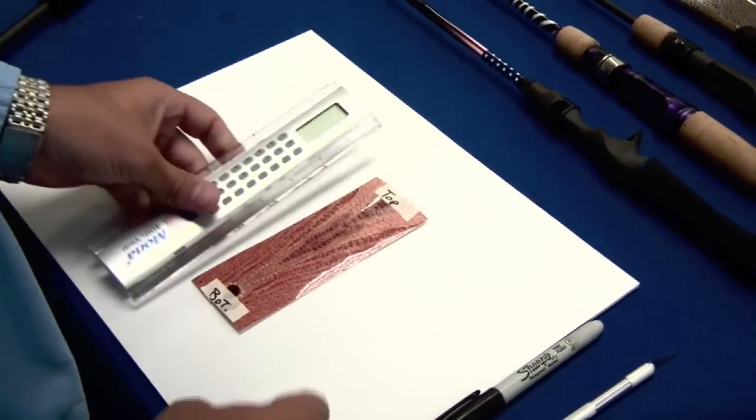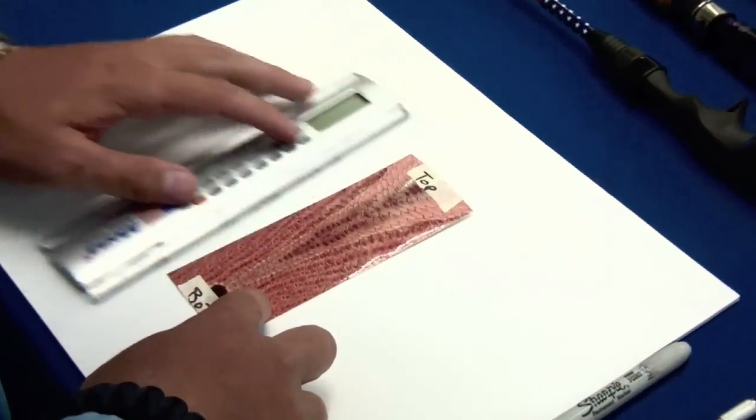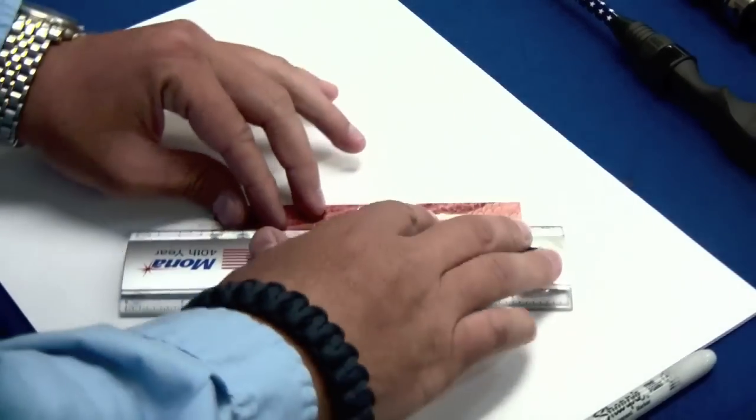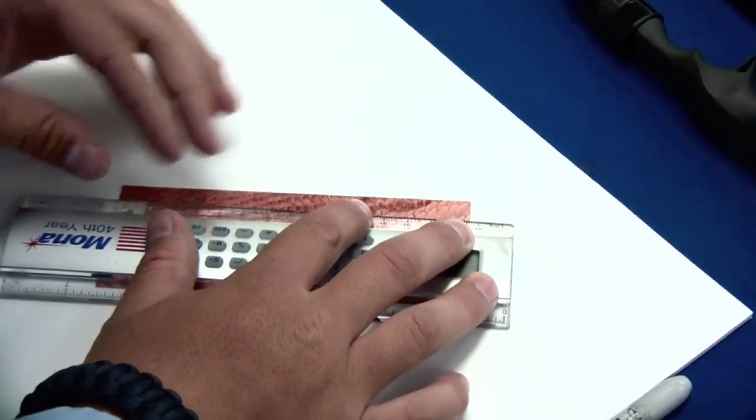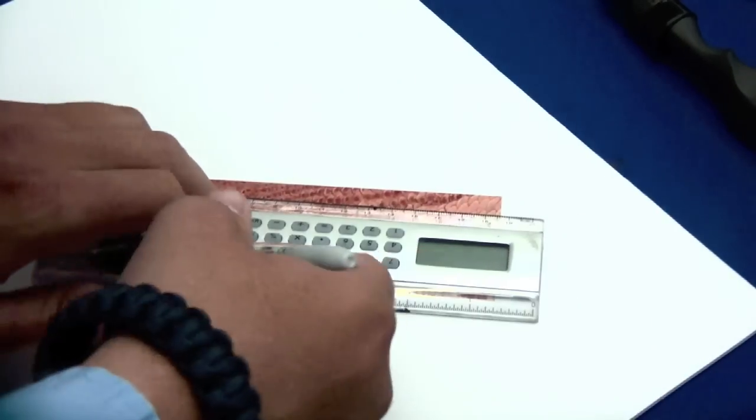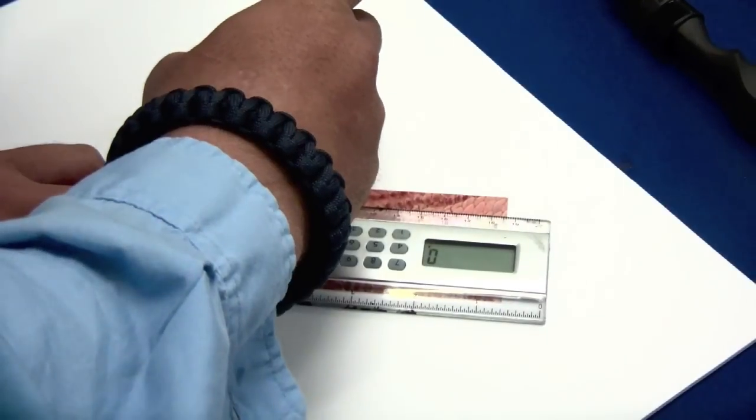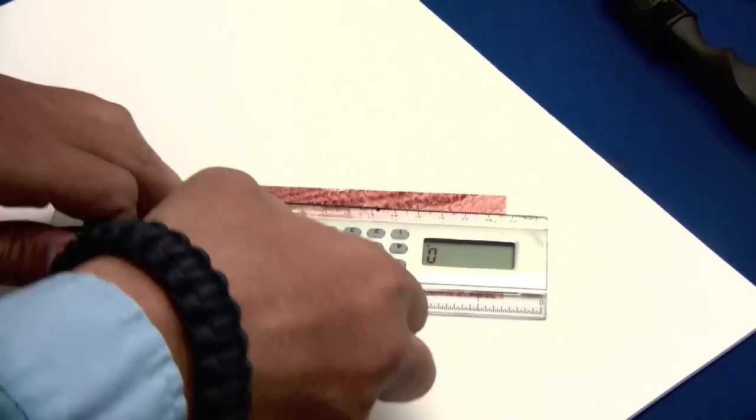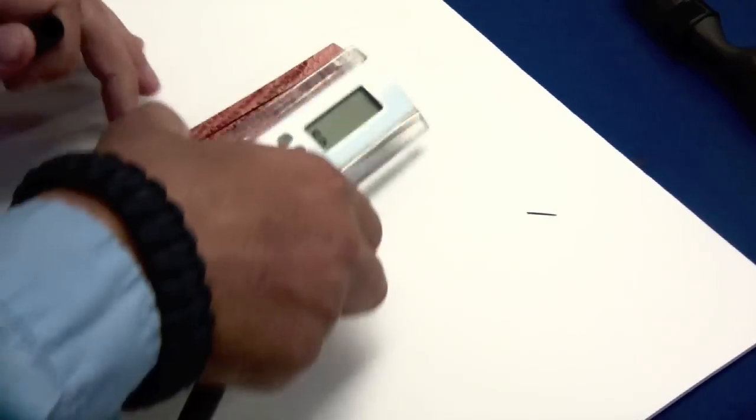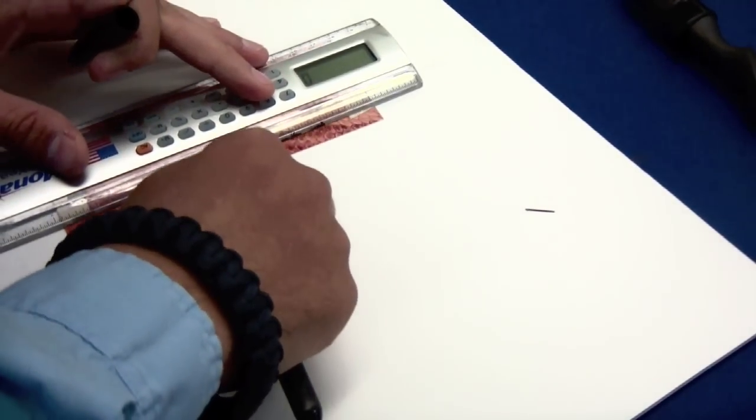Now that we have the tape here, we can go ahead and make a mark with the Sharpie where we're going to make our cuts. Now this mark is going to be at an angle because it's going to make up for the difference of taper on the blank. The same thing on both sides.